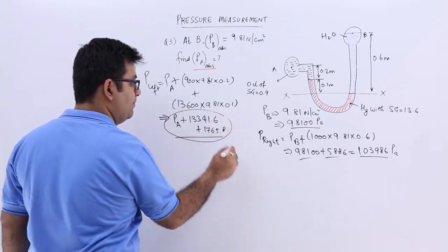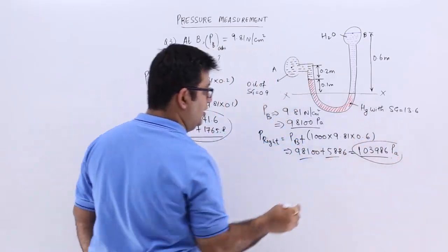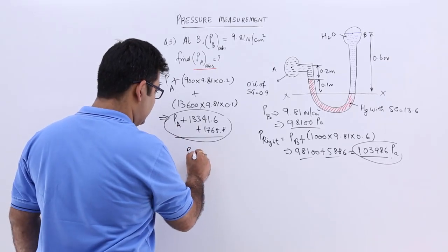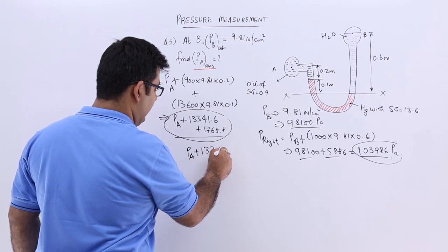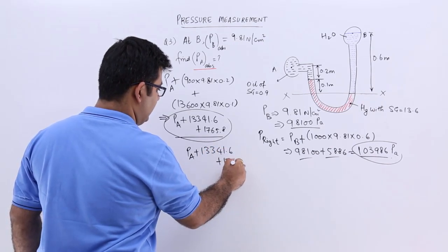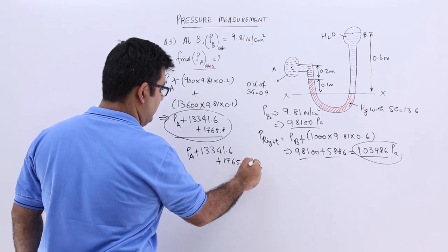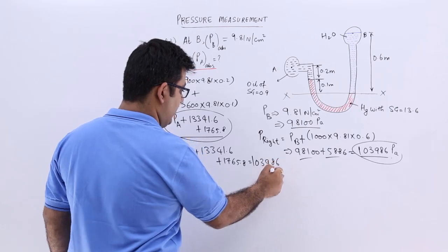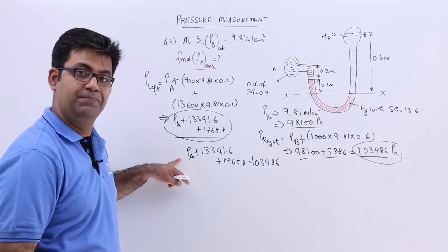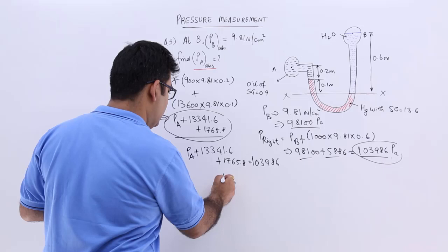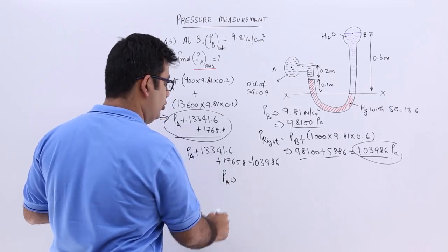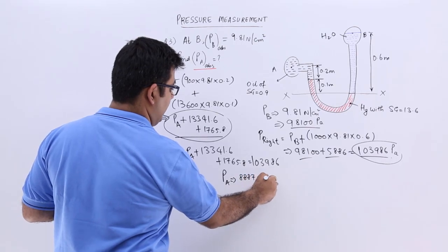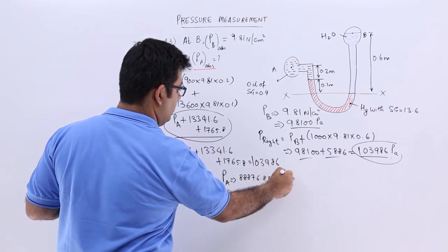So that is the total pressure on the left hand side. So now you will have to equate this part to get the value for PA. So when you do that, you write down PA plus 13341.6 plus 1765.8 equal to 103986. So from here I can easily find out PA and that will be in Pascals.